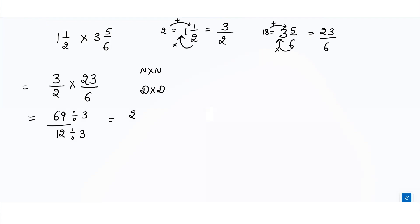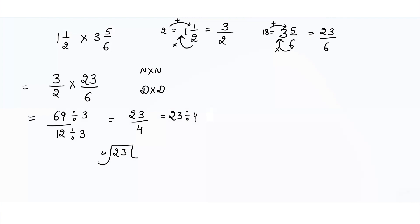Now we have to change 23 over 4 back into a mixed fraction, because we started with a mixed fraction so the answer should also be in mixed fraction form. We divide 23 by 4: 4 fives are 20, and we get 3 as the remainder.